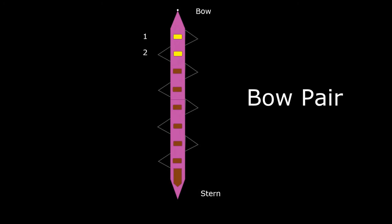Let's talk about pairs. Bow pair is the two closest to the bow of the boat. Bow four is the four closest to the bow, and bow six is the six people closest to the bow.